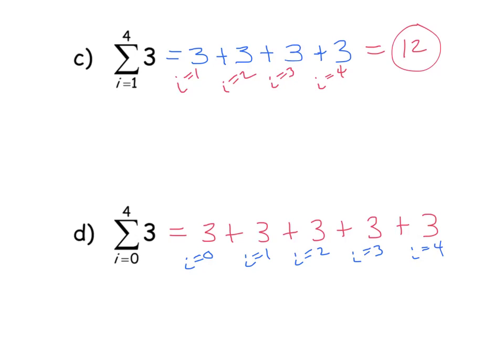So this time I have five 3's instead of four, and that's a consequence of this i starting at 0 whereas that i started at 1. Sigma notation can be a little bit confusing if you don't pay attention to those little details. Don't think of it as just adding however many numbers are at the top - I didn't add four numbers here, I added five because my index variable started at 0 not at 1. So we get 15 as our final answer.